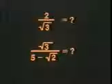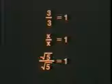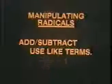To do that, you'll have to remember two things. The first is easy: any number over itself — that is, divided by itself — is equal to 1. Simple. The second thing to remember is how to manipulate radicals.